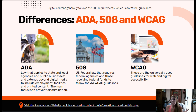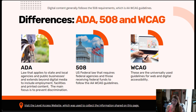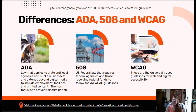That brings me to WCAG — the Web Content Accessibility Guidelines. Those are the standards that allow a person to know if they're in compliance with Section 508. These are detailed descriptions of how web content needs to be designed and executed in order to be accessible to all people. There are three levels: A, AA, and AAA. 508 compliance is based on the AA guidelines.